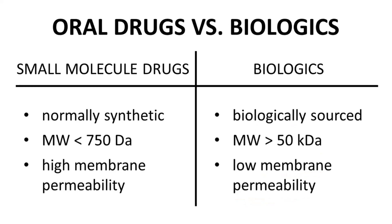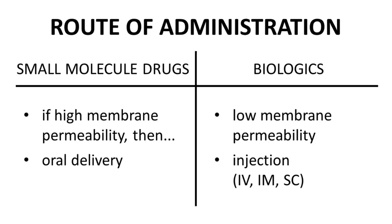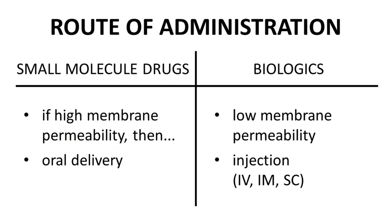Let's now see the consequences of these properties on the PK behavior of these drug types. If a small molecule drug has good membrane permeability, it may be administered orally — the drug can cross the lining of the GI tract and ultimately reach the systemic circulation. Biologics have poor membrane permeability and are not absorbed orally. They are generally administered by injection, perhaps directly into the bloodstream by IV, but more often by intramuscular or subcutaneous injection.